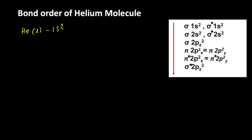In the helium molecule we have two helium atoms, so we can write for the other helium atom also the same electronic configuration: 1s². Here you can see a table which represents the filling of molecular orbitals in increasing order of their energy. It means after filling sigma bonding molecular orbitals, only then can electrons enter into sigma star antibonding molecular orbitals. In the helium molecule we have a total of 4 electrons.